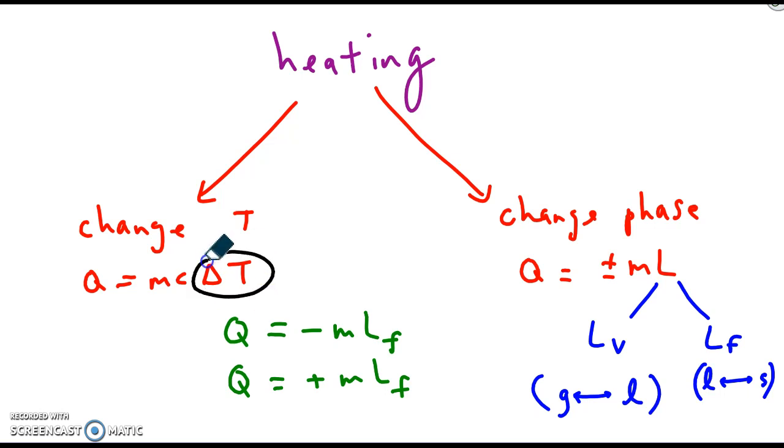By contrast, this equation needs no positive or negative added in because it shows up on its own through the delta T. If you have a final temperature of 5 and an initial temperature of 15, then doing final minus initial gives us a negative value. So the negative shows up on its own.